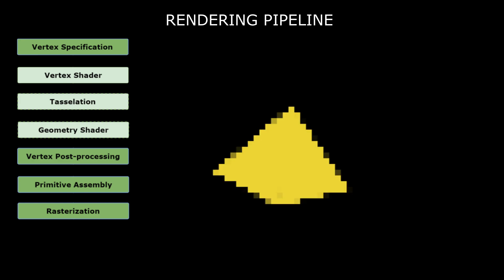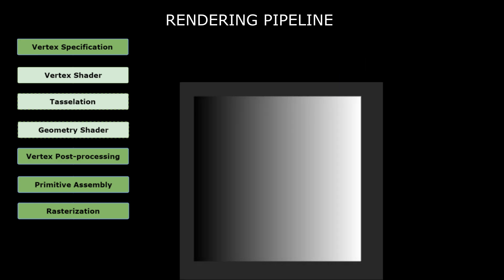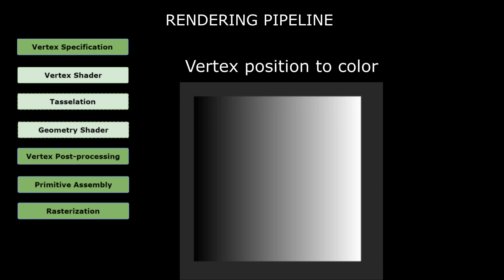Fragments are what we would call a candidate for a pixel. The data — like position, UV, and color of each fragment — is calculated using the interpolated output of the vertex shader. So if you have a rectangle and want to visualize the color of each pixel using vertex positions, you would end up with a gradient.